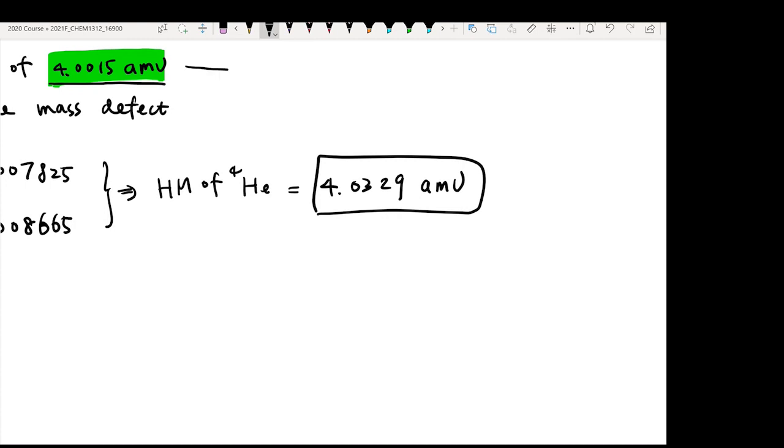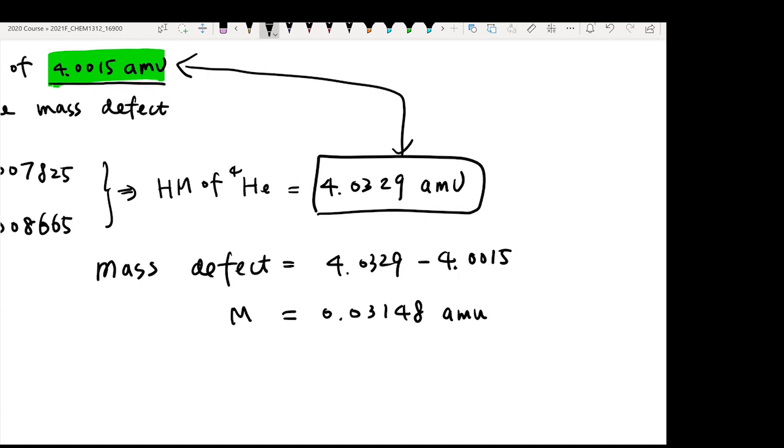But if you compare this hypothetical mass to the actual mass, you'll realize they are not exactly the same. There are some differences between the two masses. And that difference is the so-called mass defect. The mass defect is simply equal to 4.0329 minus 4.0015. Then you're going to get a value of 0.03148 amu.